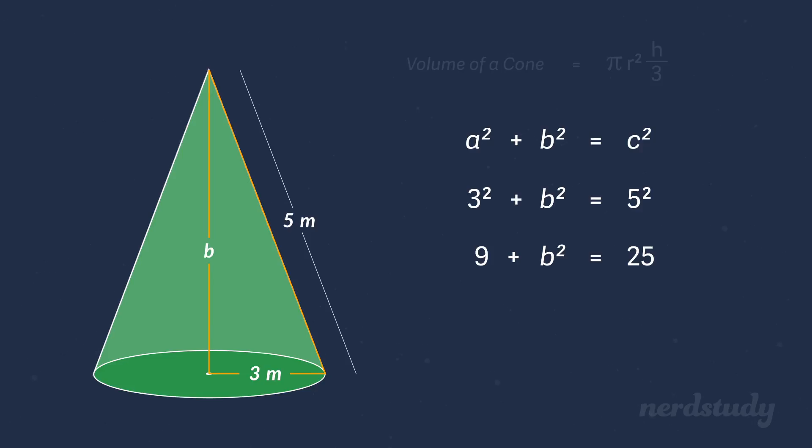Then we get 9 plus b squared equals 25. Isolate b squared by subtracting both sides by 9 to get b squared equals 16. Let us square root both sides to get b equals 4. So the height is 4.